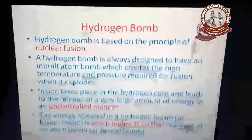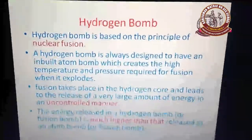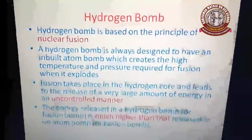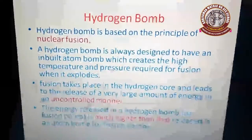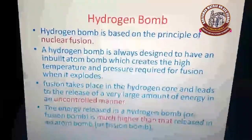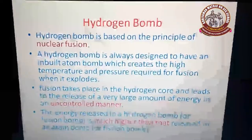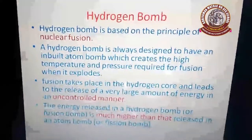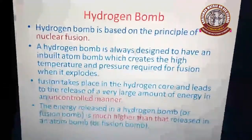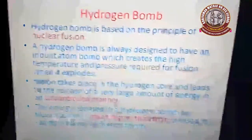Next we are going to see about the hydrogen bomb. Last class we saw the atom bomb; here we are going to see about the hydrogen bomb. Both atom bomb and hydrogen bomb work on the principles of uncontrolled chain reactions. However, in the atom bomb a nuclear fission reaction takes place, but in the hydrogen bomb a nuclear fusion reaction takes place. That is the difference between atom bomb and hydrogen bomb.